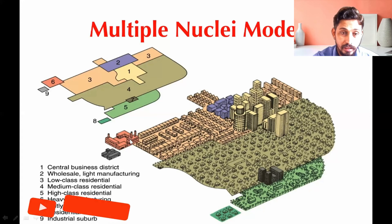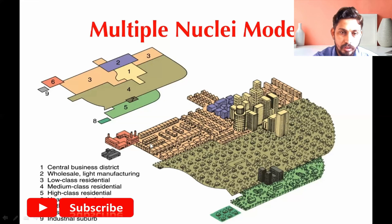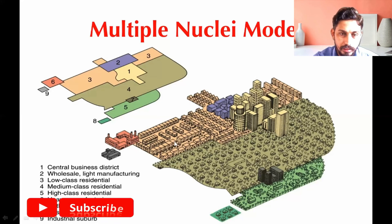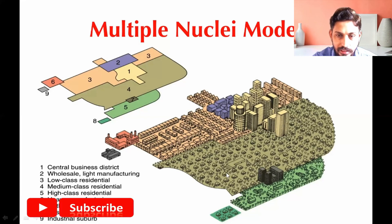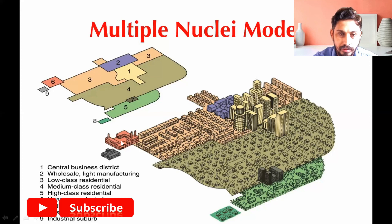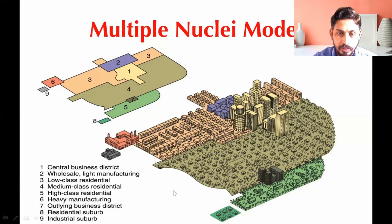The fifth zone is the high-class residential area. The sixth is associated with heavy manufacturing — this new nucleus is created near the third zone because cheap labor is available there. Zone seven is the outlying business district, which exists because of the high-class residential area nearby. Zone eight is the residential suburb, related to the outlying business district, where people who work in that district reside. Zone nine is the industrial suburb, related to heavy manufacturing.